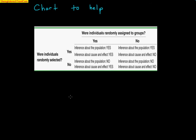The most common scenario in an experiment is using volunteers. They were not randomly selected, but who got which treatment was random. So you can show cause and effect; you just can't necessarily apply what you learned to the entire population.